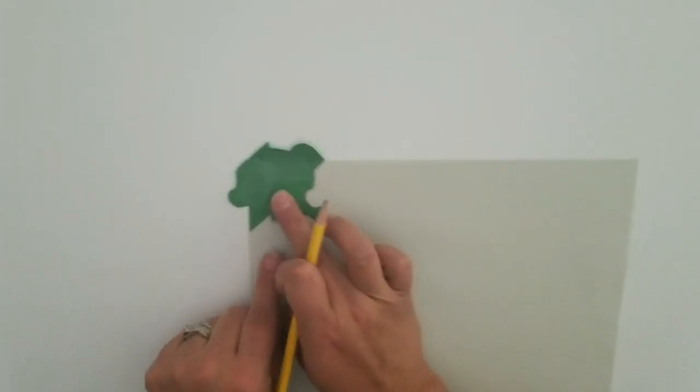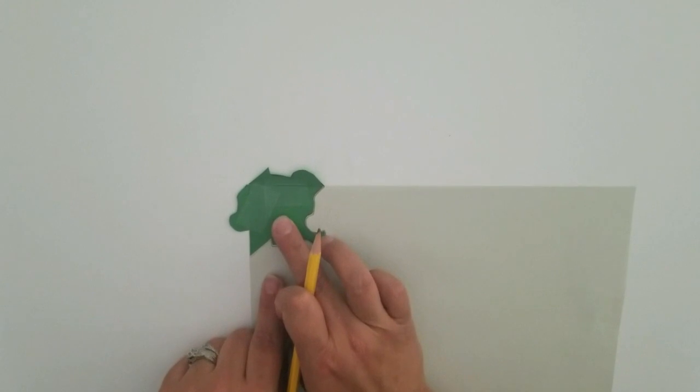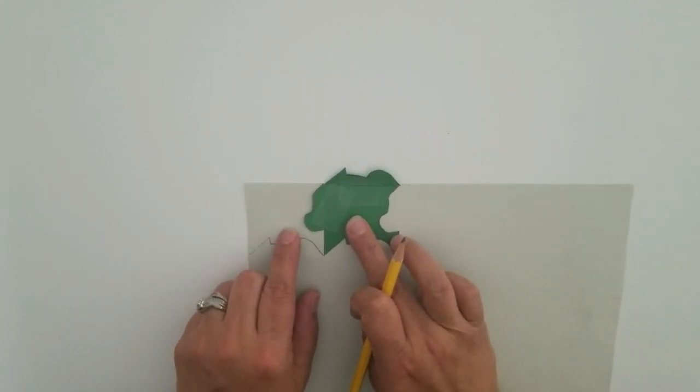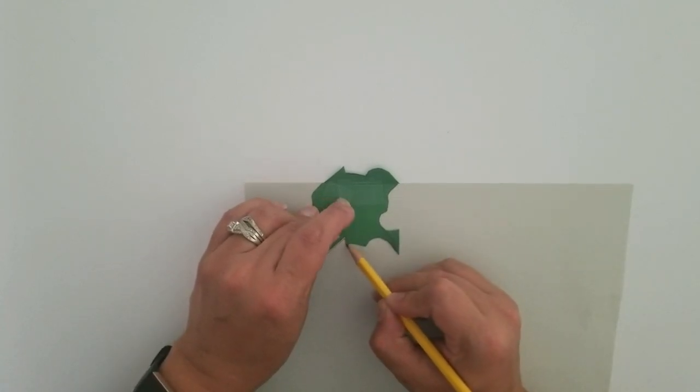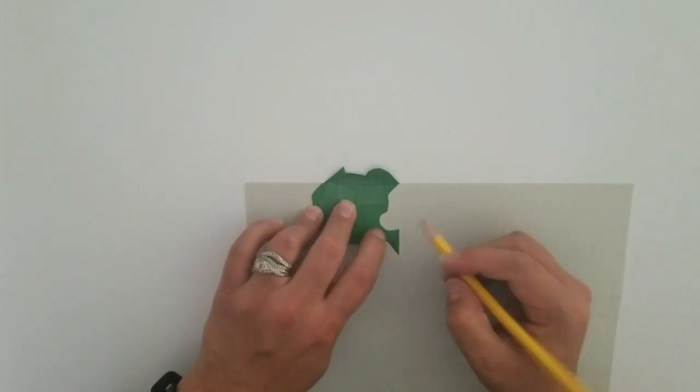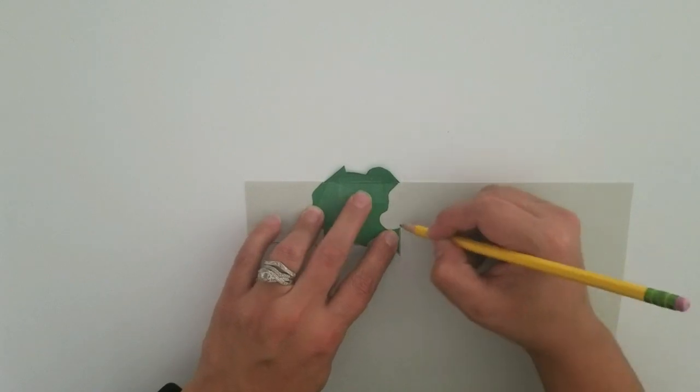What's going to end up happening is you're going to create like a puzzle piece. You can slide your original piece over and line it up into the trace marks that you have traced on the paper.